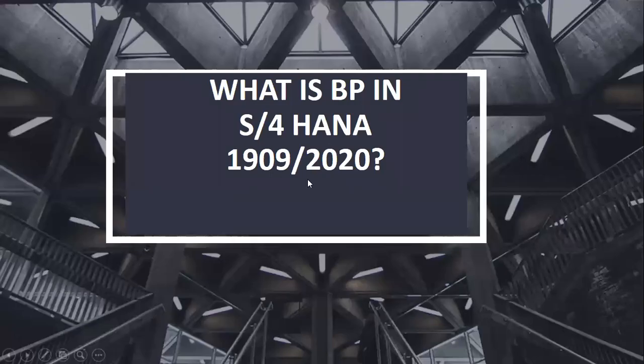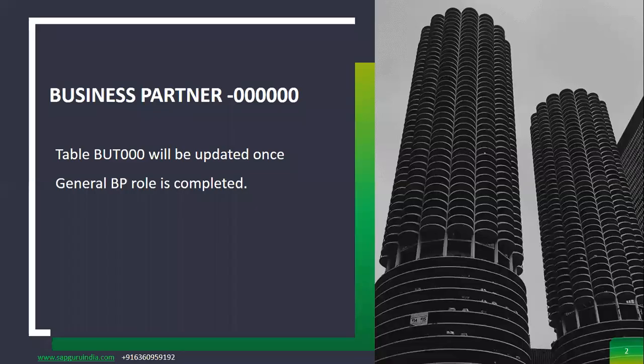Let's understand what is BP — Business Partner. Business Partner is a concept which is not new; it was there in ECC also. When it comes to S4 HANA, here we are going to manage or create all activities for creation of customer and vendor. Now vendor is called a supplier in S4 HANA system — we call it supplier master, not vendor master.